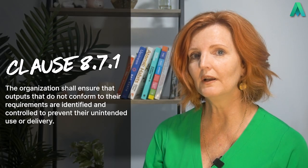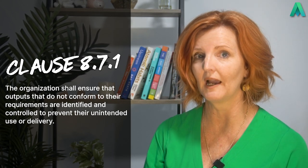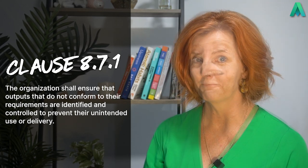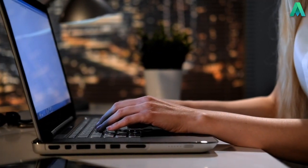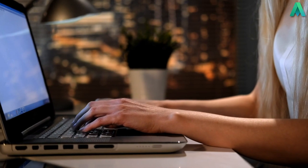This clause starts off with subclause 8.7.1. The organisation shall ensure that outputs that do not conform to their requirements are identified and controlled to prevent their unintended use or delivery. This is just saying that we are required to identify when we have produced our product or service and it does not meet the customer or other interested parties' requirements. When we do identify it, we need to take action to control it so that we stop it from happening again.